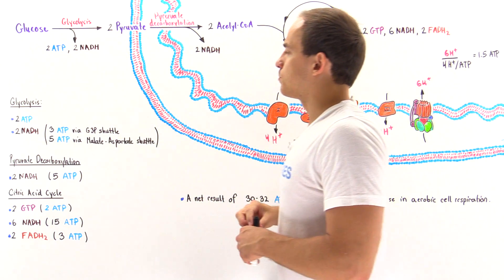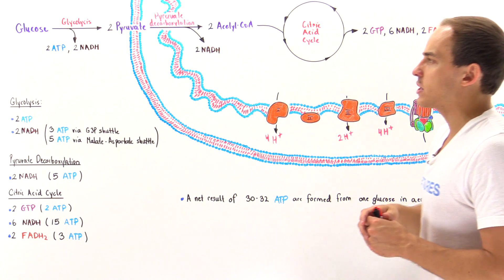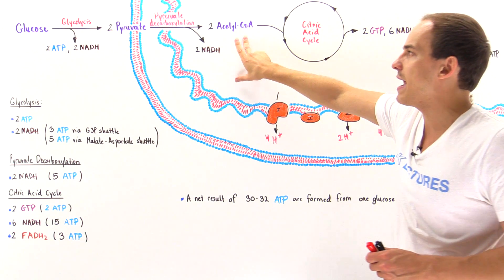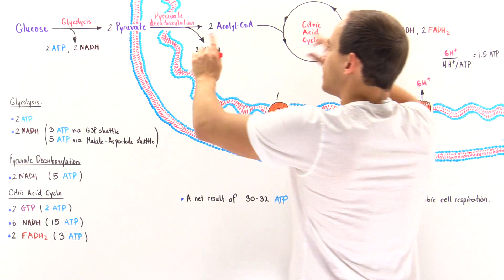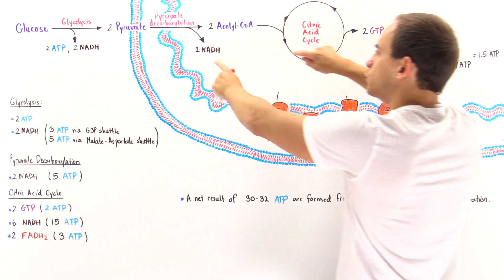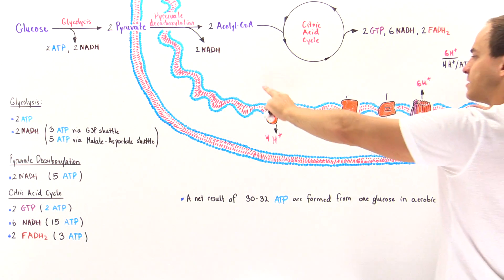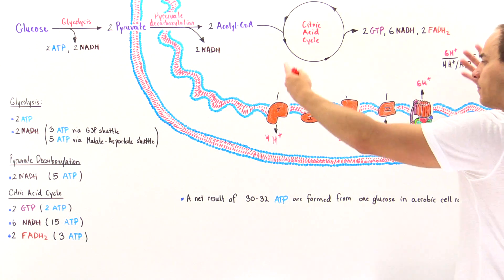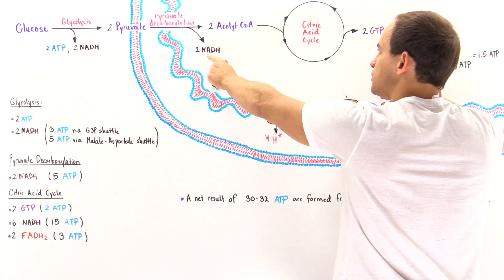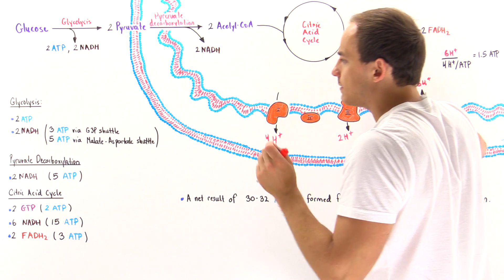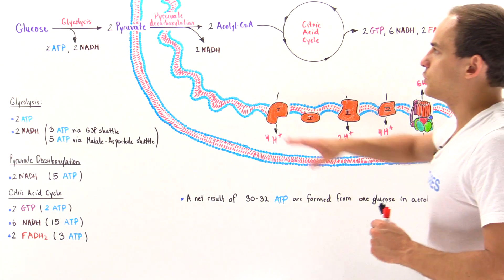The two pyruvate molecules produced in the cytoplasm then move into the matrix of the mitochondria. In the matrix, pyruvate decarboxylation transforms the two pyruvates into two acetyl coenzyme A molecules, generating two NADH molecules in the process. Because these NADH molecules are produced directly in the matrix, they move directly onto complex 1, producing 2.5 ATP per NADH. Two NADH × 2.5 = 5 ATP molecules from pyruvate decarboxylation.